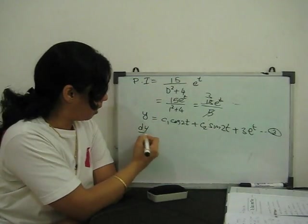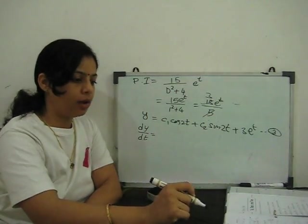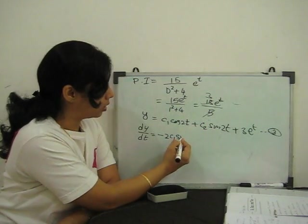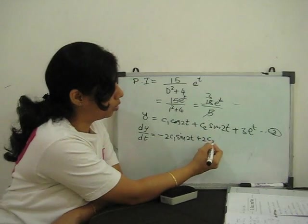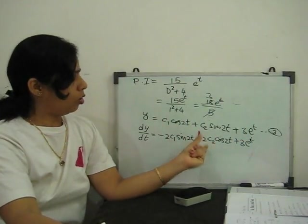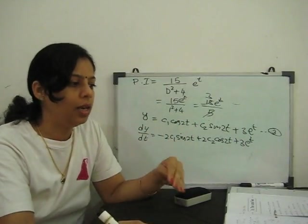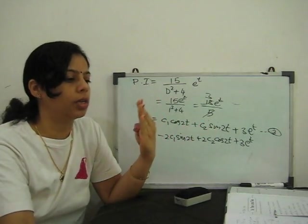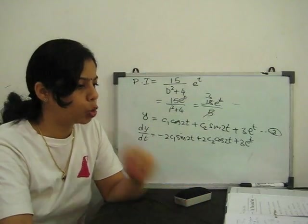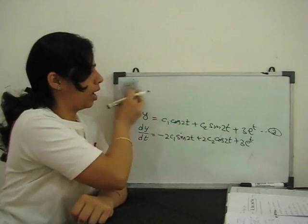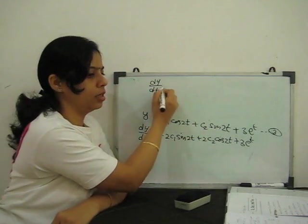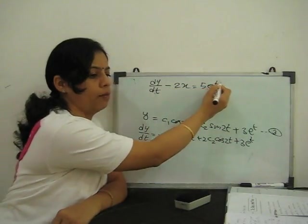To find x, we differentiate y with respect to t: dy/dt = −2c₁sin(2t) + 2c₂cos(2t) + 3e^t. We then substitute these two values into our given equation 2, which is dy/dt − 2x = 5e^t.